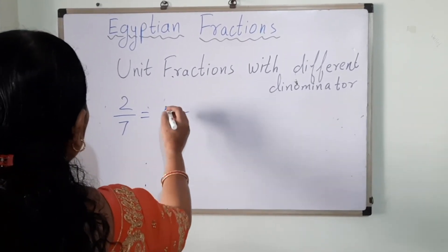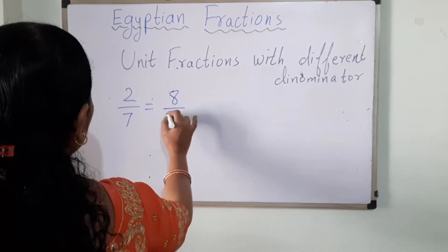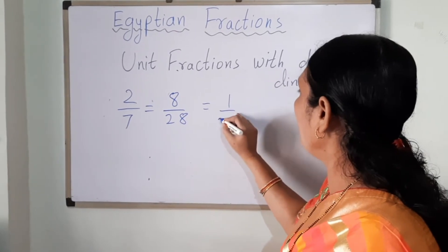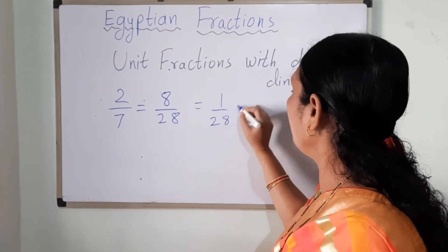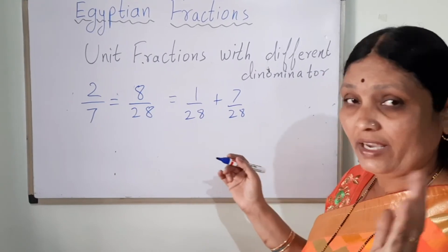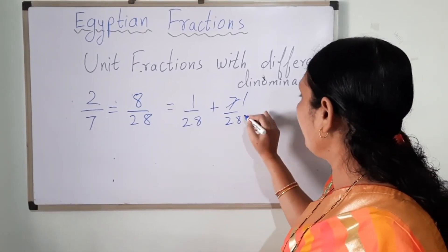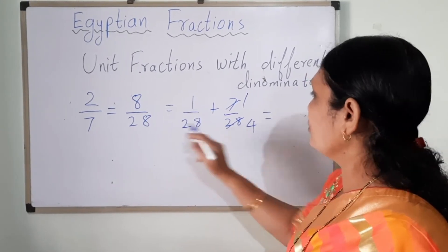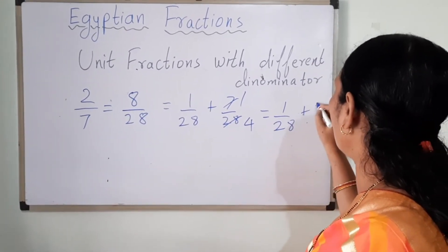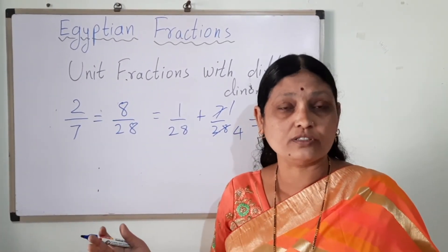We try again with another equivalent fraction, multiplying by 4: 2 fours are 8, 7 fours are 28. We write this as 1 upon 28 plus 7 upon 28. Now 7 upon 28 simplifies — 7 ones are 7 and 7 fours are 28 — giving 1 upon 4. So 2 upon 7 can be written as 1 upon 28 plus 1 upon 4.